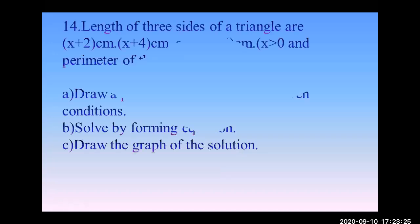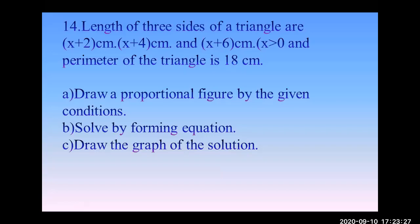Question 14: The lengths of three sides of a triangle are (x + 2) cm, (x + 4) cm, and (x + 6) cm, where x > 0. The perimeter of the triangle is 18 cm. Draw a proportional figure using the given conditions, solve by forming an equation, and draw the graph of the solution.